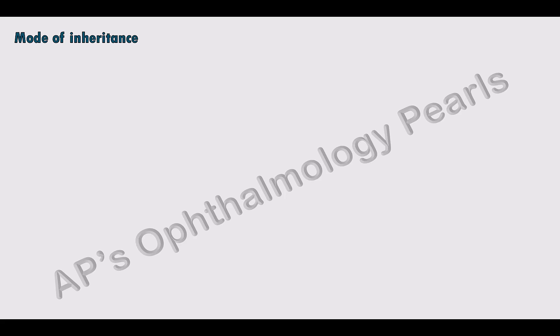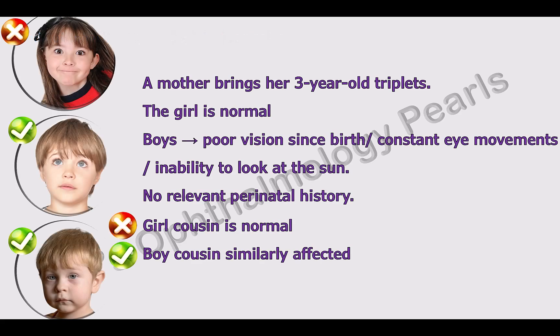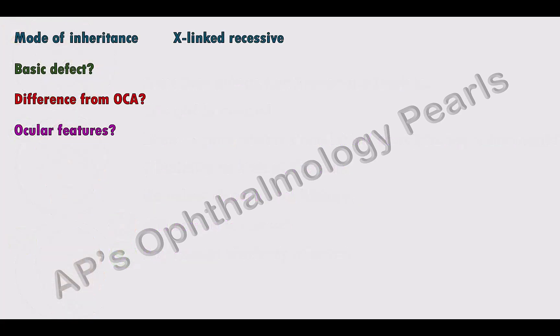The mode of inheritance is X-linked recessive. This is why only the boys in the family are affected. The basic defect involves mutations in the GPR143 gene — the G-protein coupled receptor 143 gene.